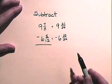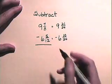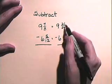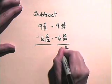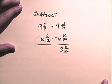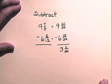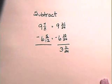So, 9 and 21 twenty-fourths subtract 6 and 10 twenty-fourths will be 21 minus 10 is 11 twenty-fourths. 9 minus 6 is 3. So, the difference is 3 and 11 twenty-fourths.